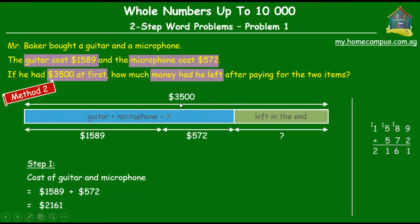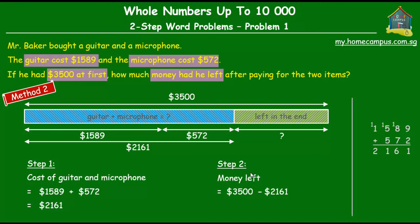Out of the $3500 he had at first, he spent $2161 on the guitar and microphone together. Step 2: $3500 minus $2161. We regroup the hundreds and tens — 10 minus 1 is 9; 9 minus 6 is 3; 4 minus 1 is 3; 3 minus 2 is 1. So the money he had left after paying for the two items was $1339.